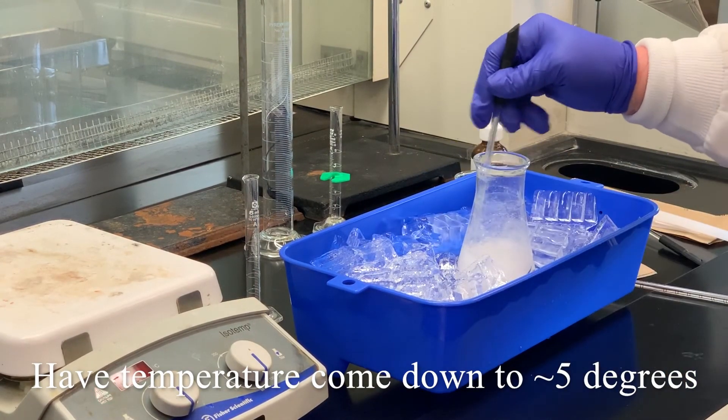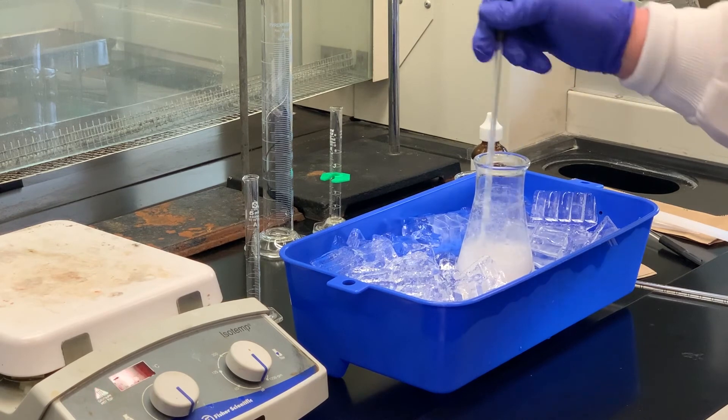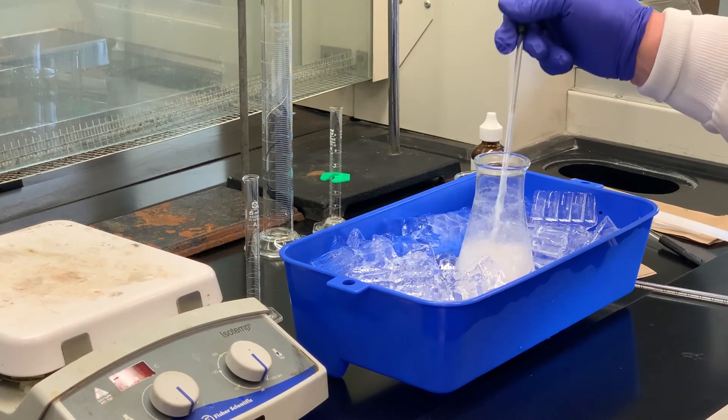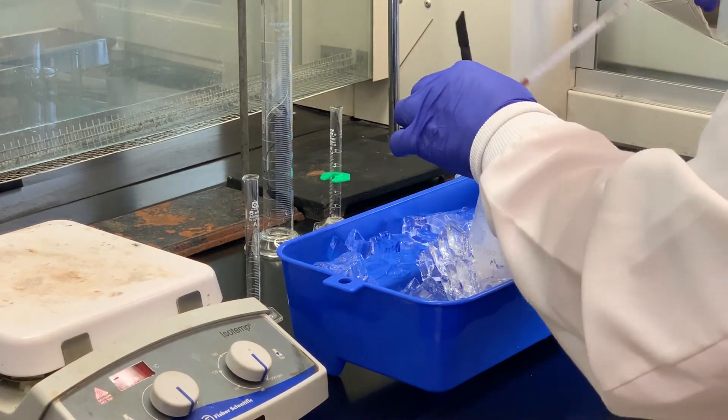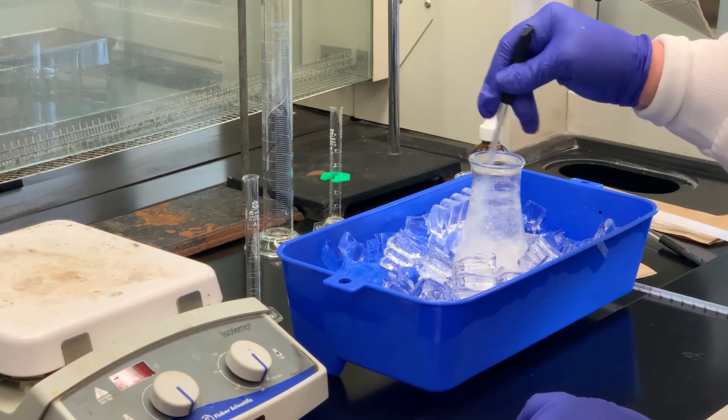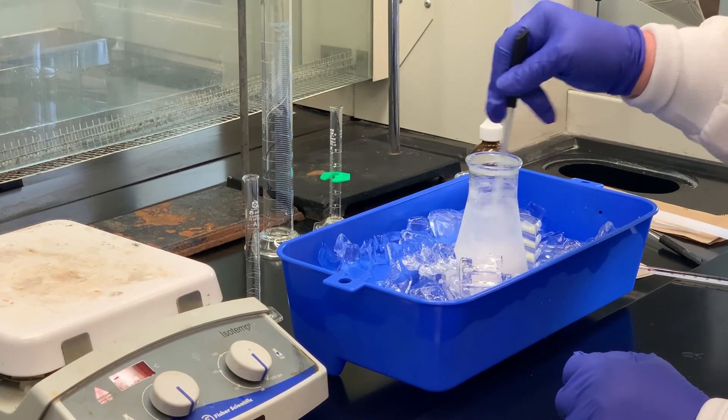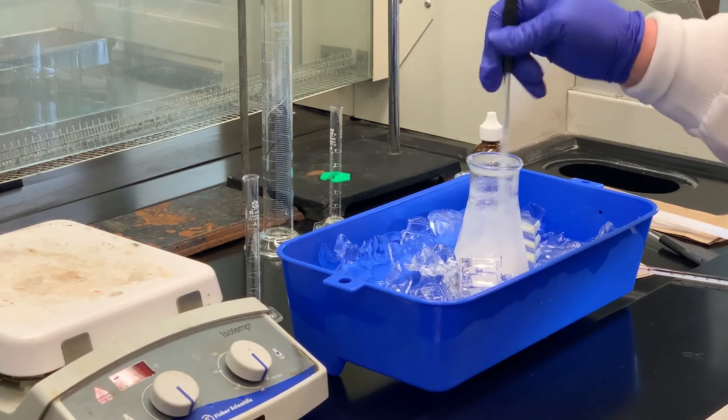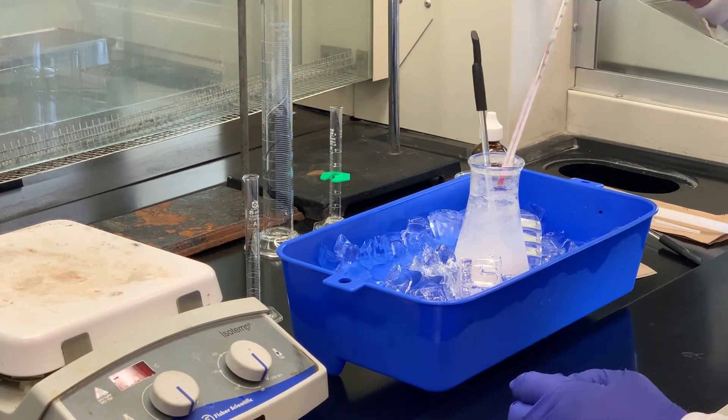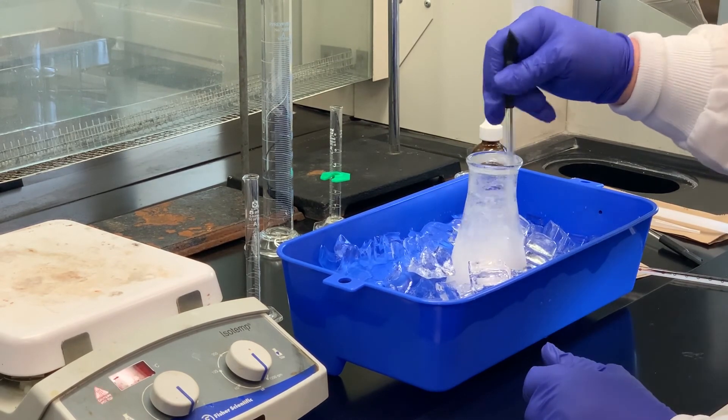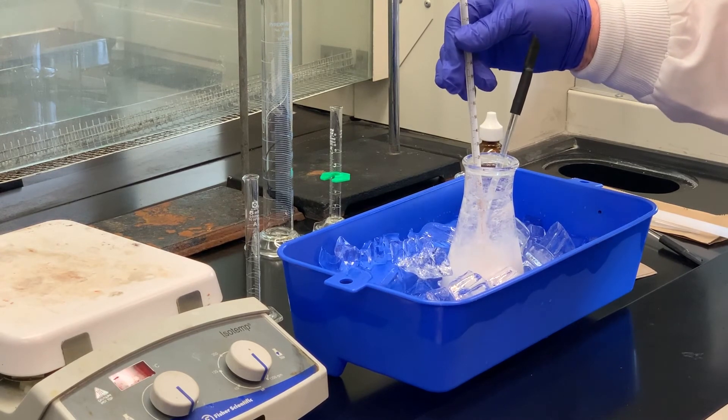We want the temperature of the contents of the flask to cool down to about 5 degrees celsius. As you can see, crystallization has already occurred, just below 20, looks like we're close to 10, looks like we're about 8. Although it's tempting, please do not stir the contents with the thermometer. And it looks like we're at 5 degrees, so we're going to stop the stirring process.